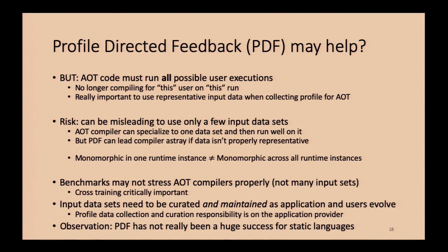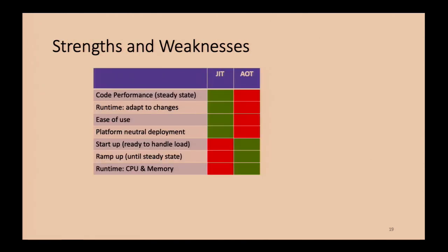I'll make an observation without data: profile-directed feedback hasn't really been a tremendous success for static languages — it's not what everybody uses in every compile, it's a few people who've gotten some benefits but it's usually hard to make it work well over a long period. Returning to my chart, I've added an AOT column: yes, it converts the lower three boxes from red to green — startup is fast, ramp-up is good, runtime CPU and memory overhead from the JIT is gone. But we'll probably have lower code performance, we can no longer adapt at runtime, it's not easy to use, and we're no longer platform neutral.